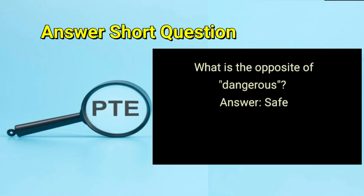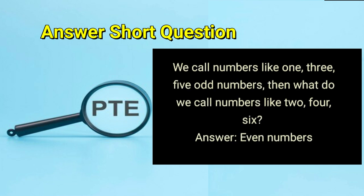What is the opposite of dangerous? Answer: safe. We call numbers like 1, 3, 5 odd numbers. Then what do we call numbers like 2, 4, 6? Answer: even numbers.